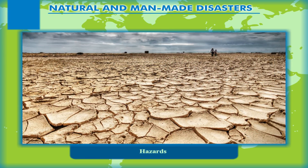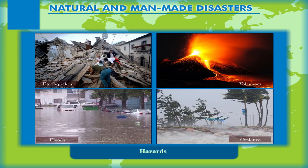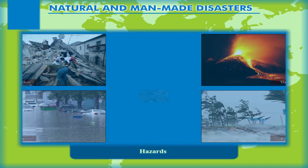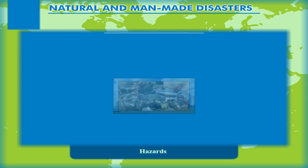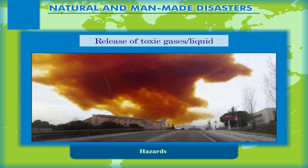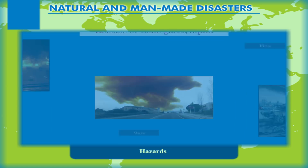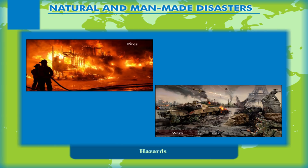Hazards. The potential threat posed by natural or man-made calamities is termed as hazard. Thus, earthquakes, volcanoes, floods, cyclones etc. are called natural hazards. Threats like epidemics, widespread diseases, nuclear radiations, release of toxic gases or liquids, fires, wars etc. are man-made hazards.